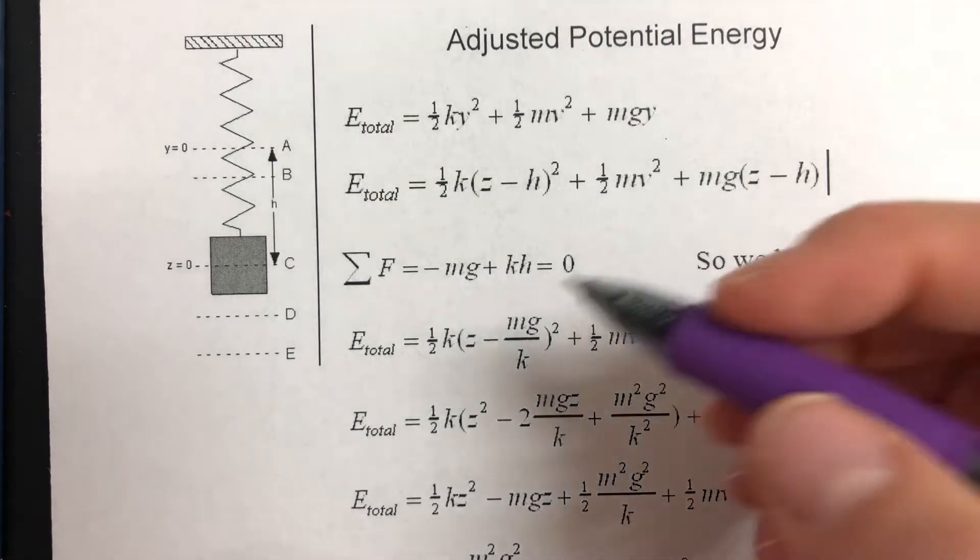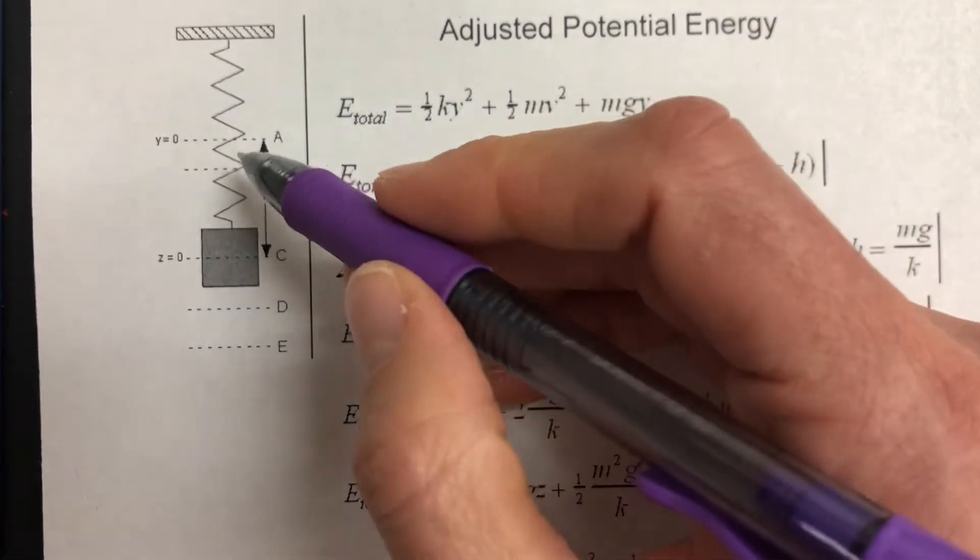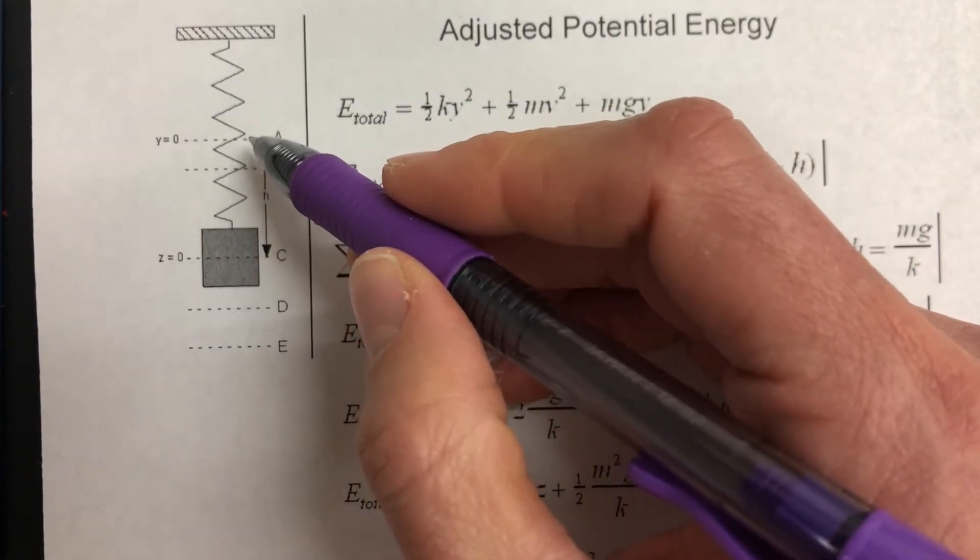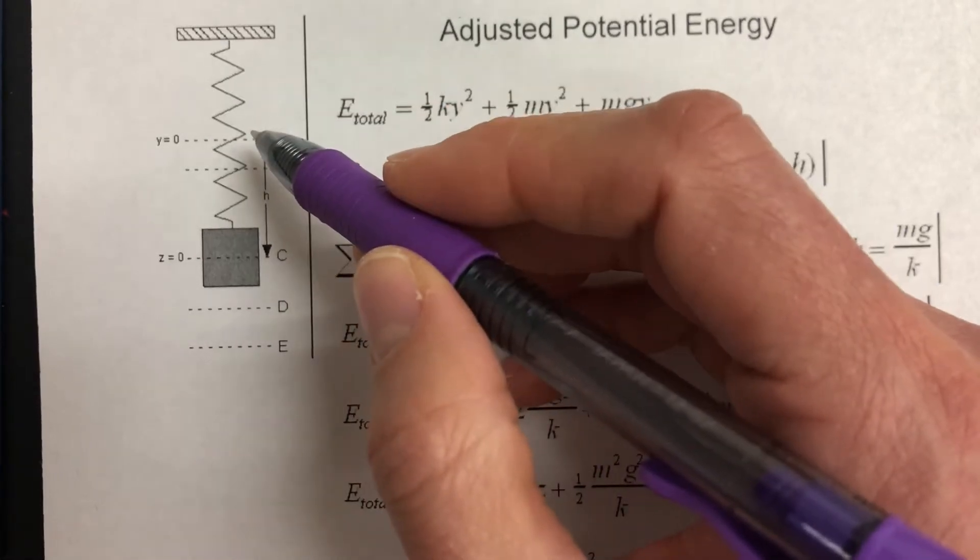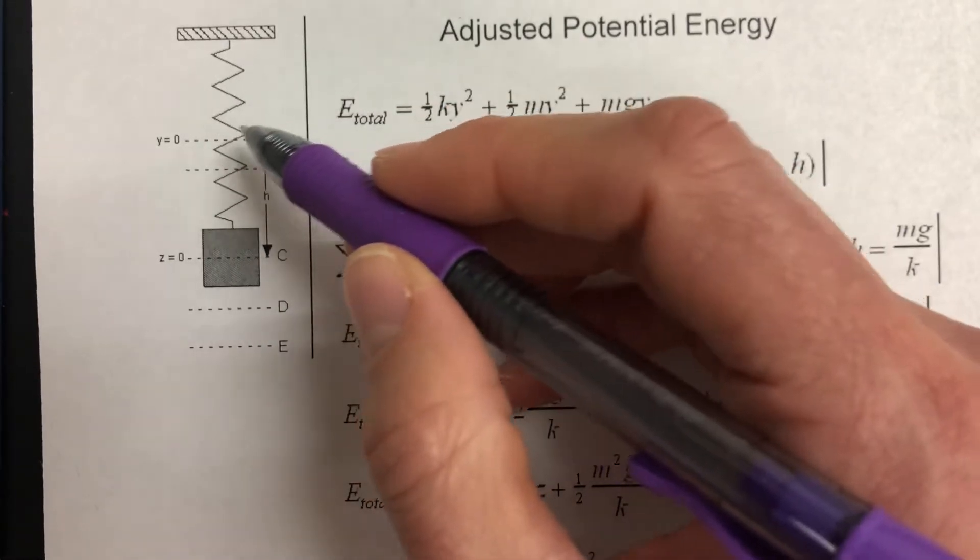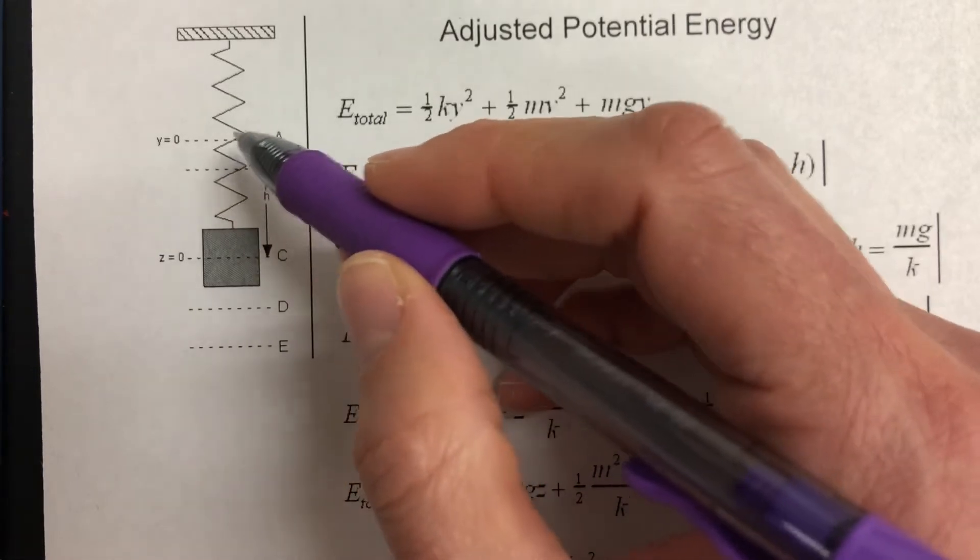In this diagram, the y equals zero is the equilibrium position for the spring. So if there was no mass on the spring, then that's where the end of the spring would be at y equals zero.